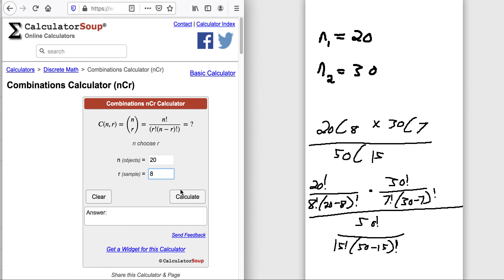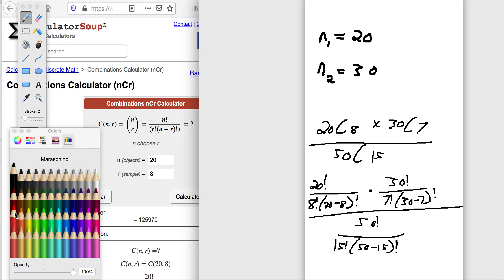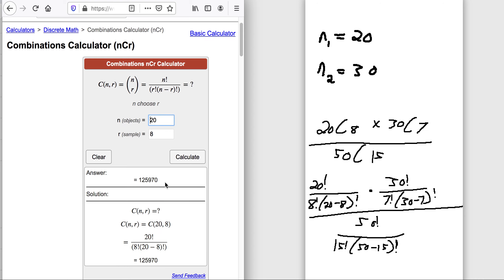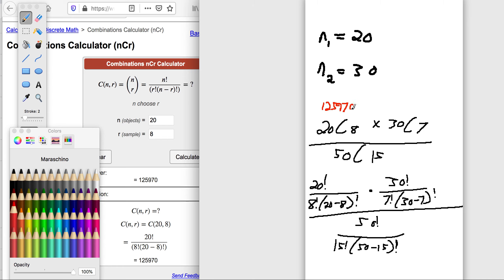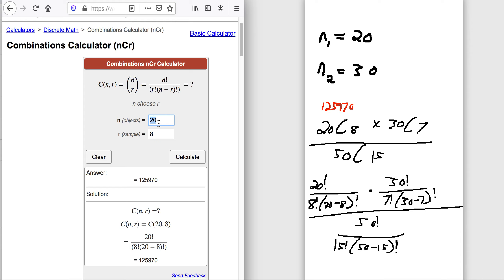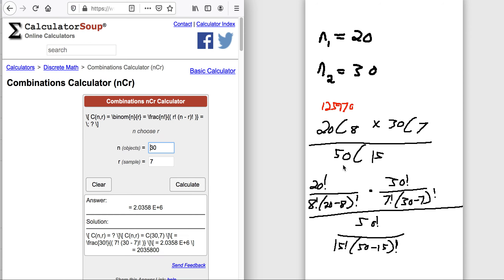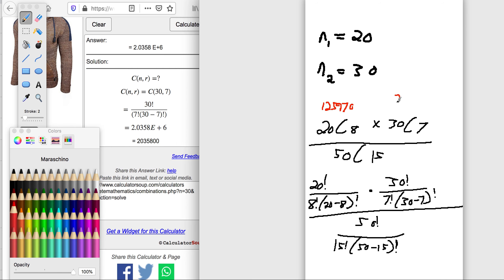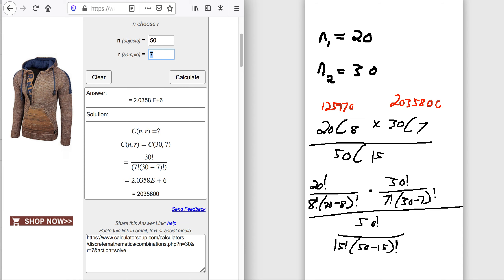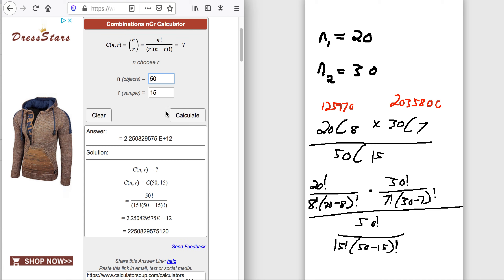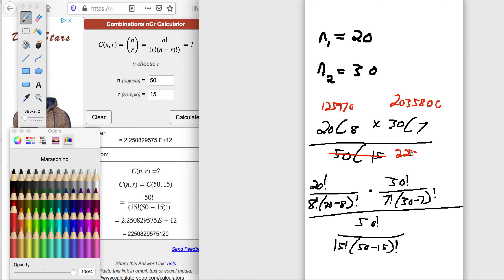Let's do 20 choose 8 here. That one we can do. 20 choose 8 gives us 125970. So, 30 choose 7 gives us 2035800. And then 50 choose 15. That's 2250829575120. Huge number.